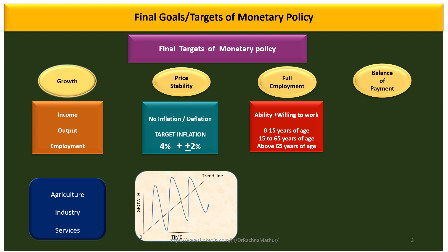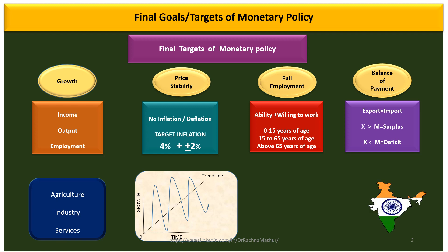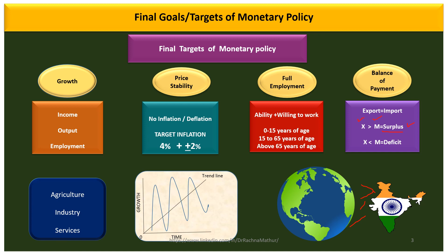Next is balance of payment, which plays a very important role in an economy like India, which is part of the globalized world. If exports equal imports, trade is balanced. If exports are more than imports, there is a surplus balance of payment. But when exports are less than imports, it leads to a drain of resources. So the objective of monetary policy must be to achieve a surplus in the balance of payment, where exports are greater than imports, ensuring a large inflow of currency to help future growth and development.